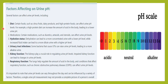Diet is a major factor — if the patient is having citrus fruits like oranges and lemons, dairy products, or a very high protein diet, that can affect the urinary pH level. A high protein diet can make urine more acidic, bringing the pH down. Medications like diuretics, antacids, and steroids can also affect urinary pH.